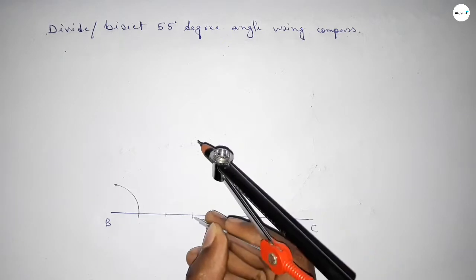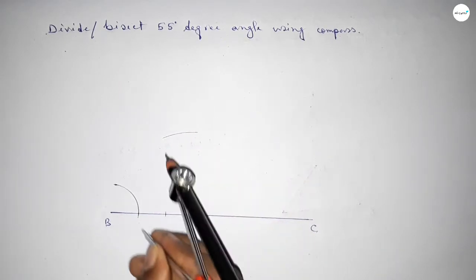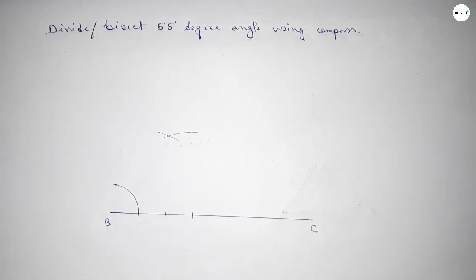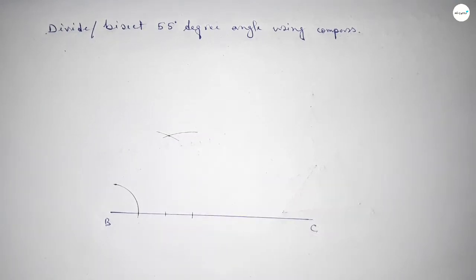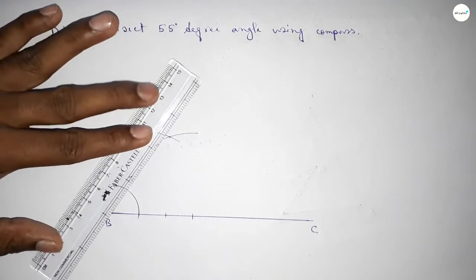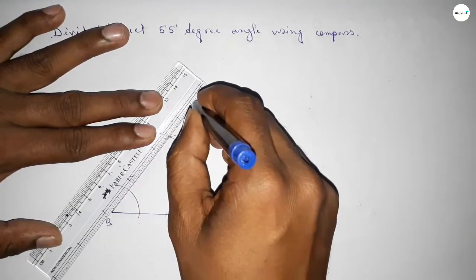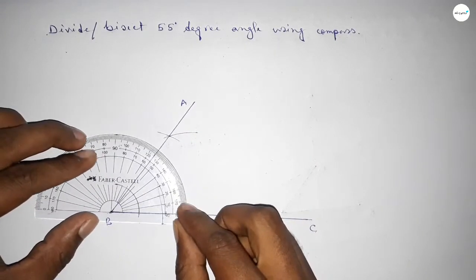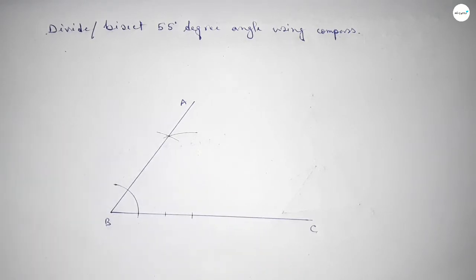Next, putting the compass here and drawing an arc. Again with the same length, putting the compass here and cutting here, so both curves intersect at a point. Now joining this line to get the 55 degree angle. Taking here point A, and checking whether it is 55 or not — this is perfectly a 55 degree angle.